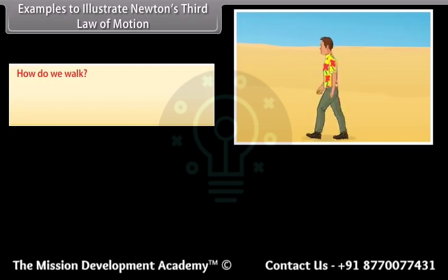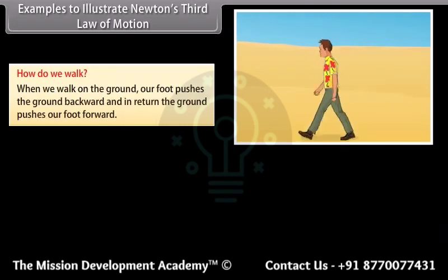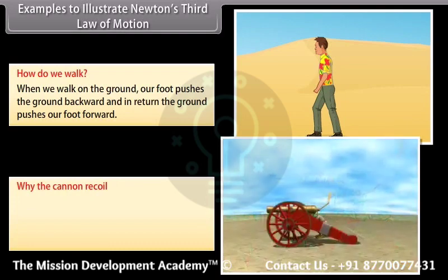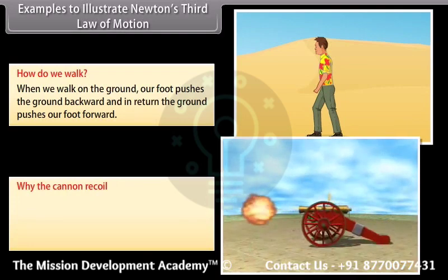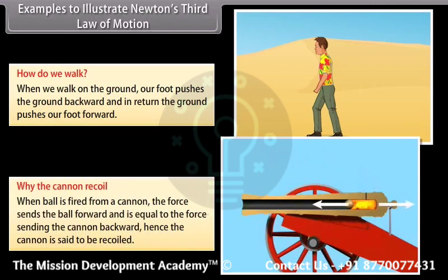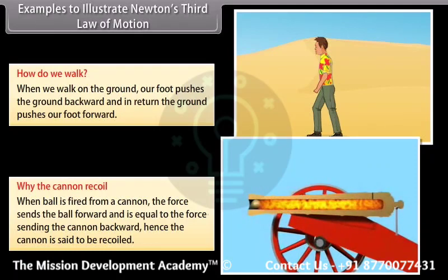How do we walk? When we walk on the ground, our foot pushes the ground backward, and in return, the ground pushes our foot forward. Why does the cannon recoil? When a ball is fired from a cannon, the force sends the ball forward and is equal to the force sending the cannon backward — hence the cannon is said to recoil.